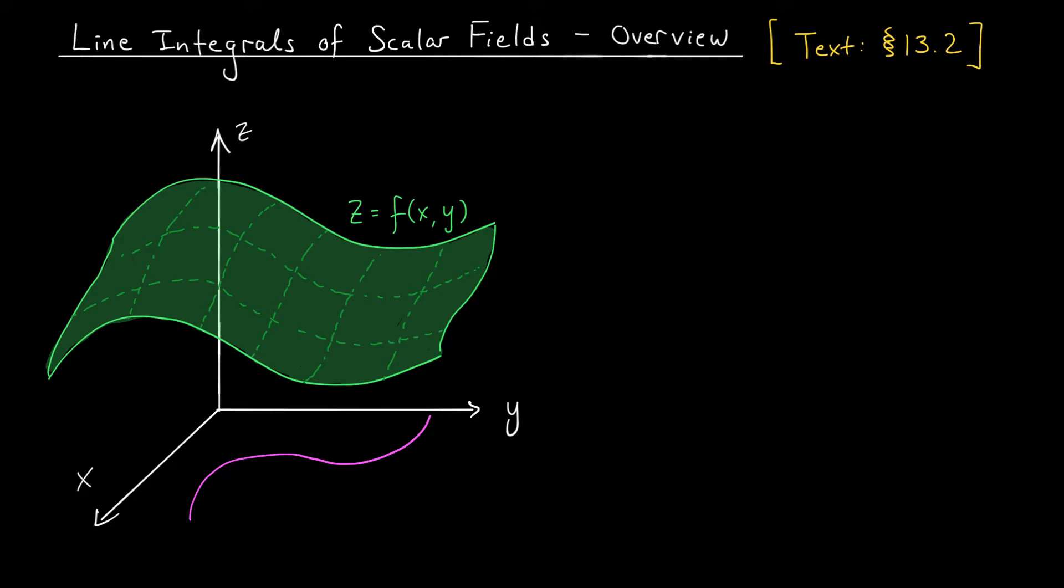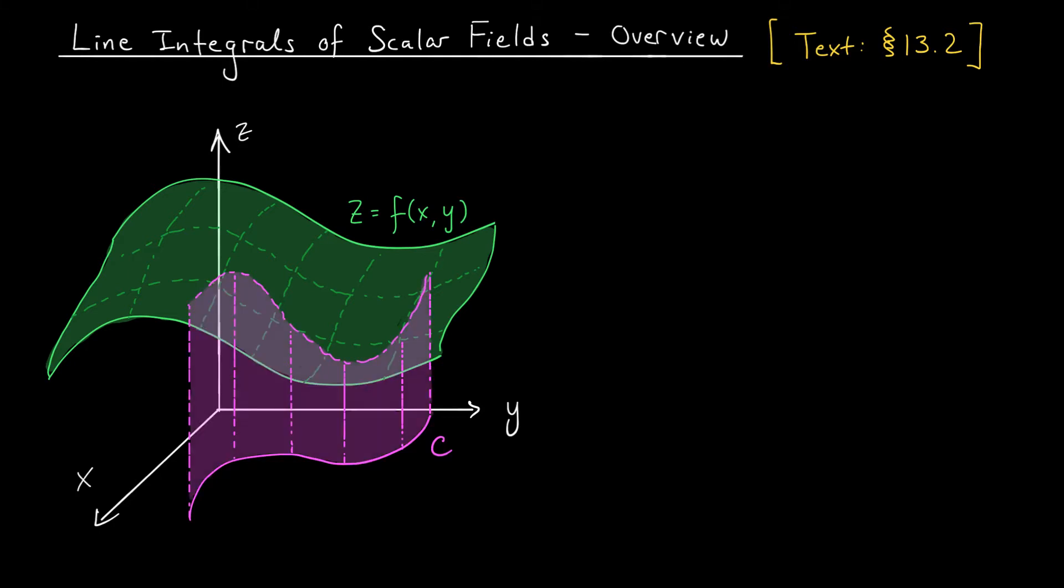So maybe my curved line looks something like this. We'll call it C. To define the integral, we're going to use our motivation from Calc 2. We want this integral to compute the area under our surface, but above the curve C. We want it to compute the area of this curtain shape. So how should we do it? How should we define this integral?